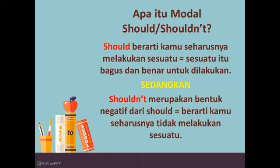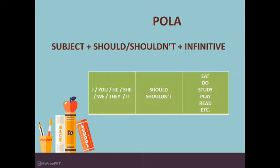Berikut ini adalah pola atau rumus dari should atau shouldn't. Rumusnya adalah: subject + should atau shouldn't + infinitif. Subject terdiri dari I, you, he, she, we, they, it. Kemudian ditambahkan should atau shouldn't, lalu ditambahkan kata kerja — bisa eat, do, study, play, read, dll.